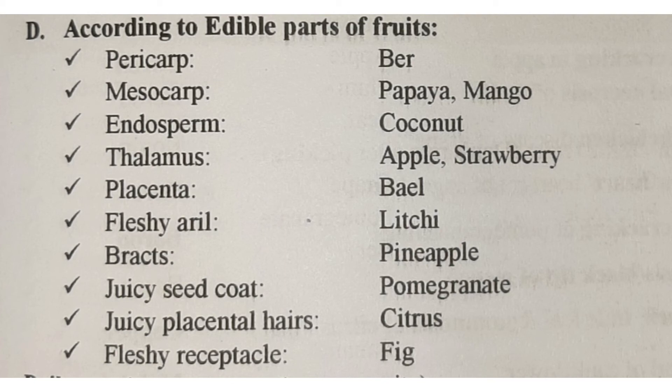Placenta for bael. Fleshy aril for lychee. Bracts for pineapple — remember, pineapple's fruit type was sorosus. Juicy seed coat for pomegranate — and pomegranate's fruit type is balusta. Juicy placental hairs for citrus — like lemon, we eat the placental hairs.